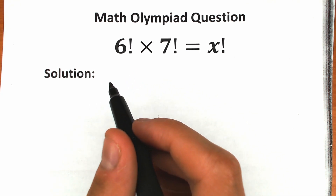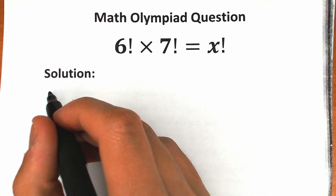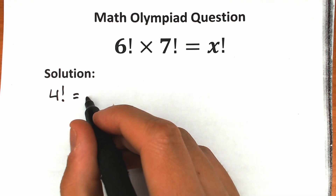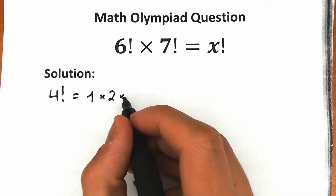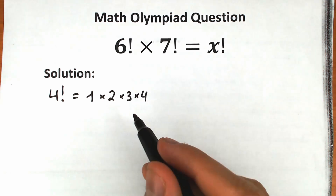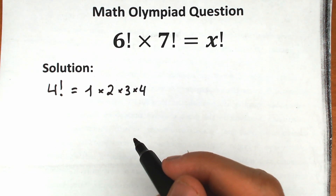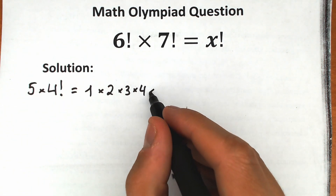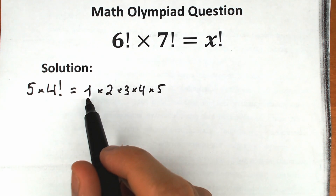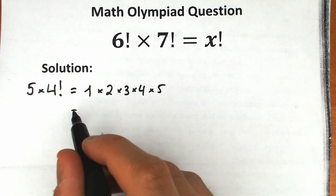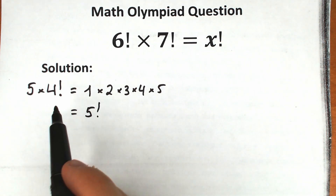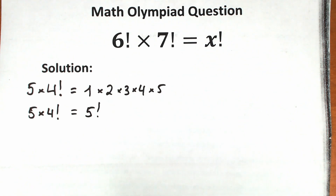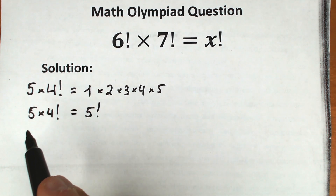Let's start with this approach. We all know that 4 factorial equals a product from 1 to 4, so we have 1 times 2 times 3 times 4. Now, if we multiply the left-hand side by 5 and the right-hand side by 5, we no longer have 4 factorial — we have 5 factorial. So on the right-hand side we have 5 factorial, and on the left-hand side we have 5 times 4 factorial. This is the key algorithm.